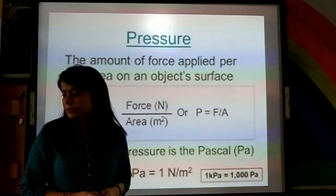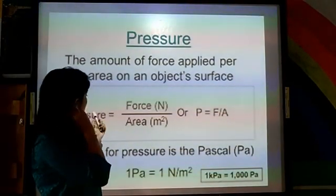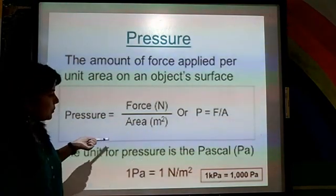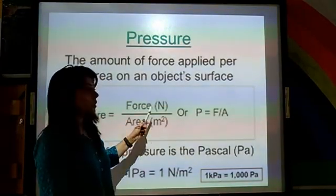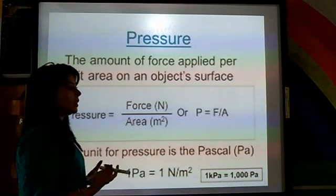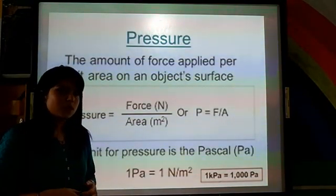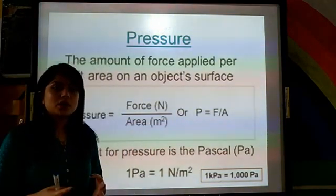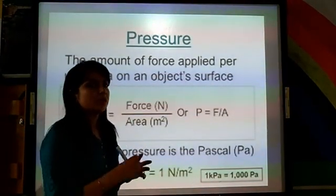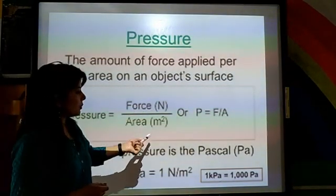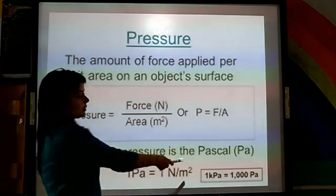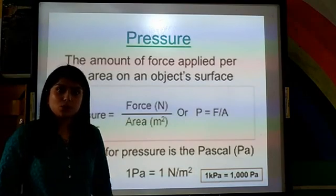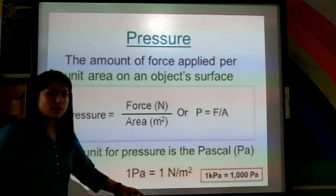Now let us discuss about the unit of pressure. Pressure is force per area. The unit of force is Newton and the unit of area is meter square. So the unit of pressure becomes Newton per meter square. There are other units of pressure as well, because there are different types of pressure — like atmospheric pressure and pressure of gases. The first unit is Newton per meter square. The other unit of pressure is Pascal, abbreviated as Pa. One Pascal is one Newton per meter square. So if you write Newton per meter square or Pascal, both will be correct — both are units of pressure.